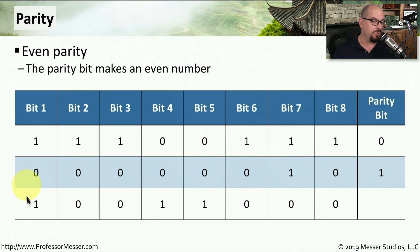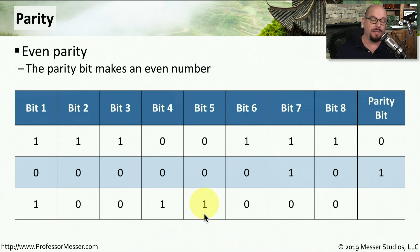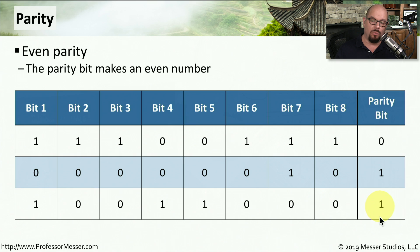For the last byte: 1, 0, 0, 1, 1, 0, 0, 0. Counting the ones gives us 3, which is an odd number. To make this even, we need to add a 1 as our parity bit.